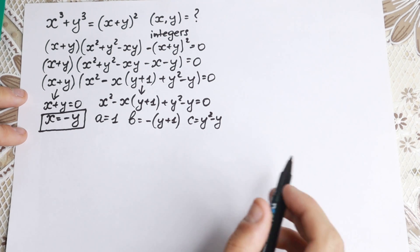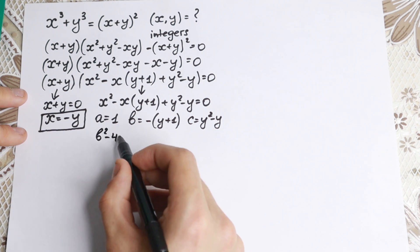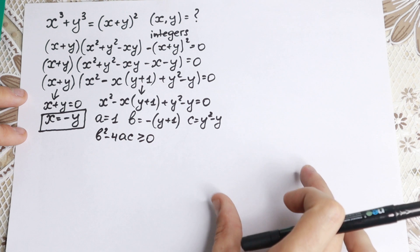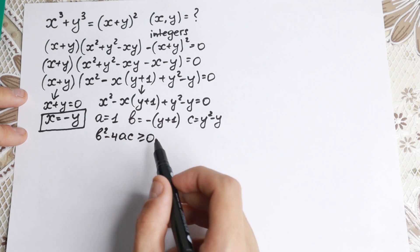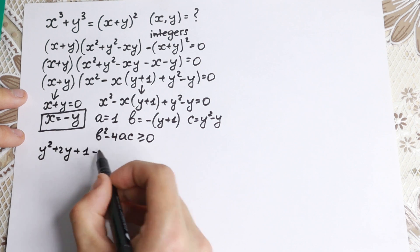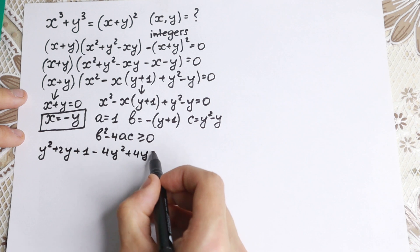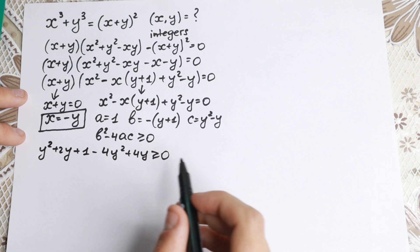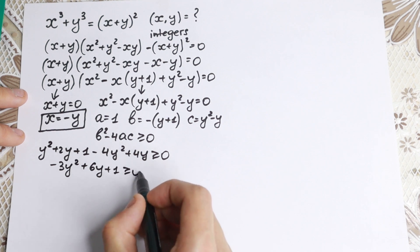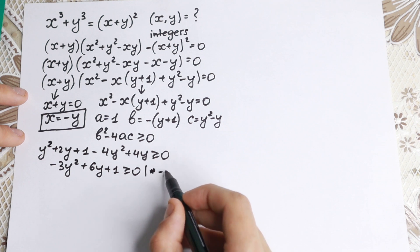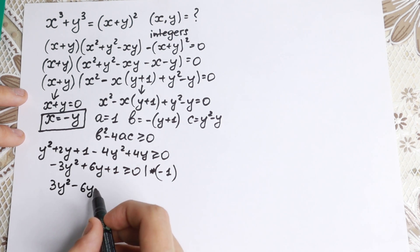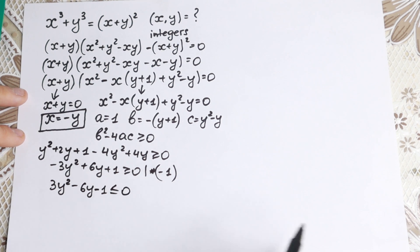We need to find where is our y. Firstly, we need to write an equation where b² minus 4ac is greater or equal to 0. This is our discriminant. Let's solve this inequality, and then we will find in which range our y lies. We have b² minus 4ac: we get y² plus 2y plus 1 minus 4y² plus 4y greater or equal to 0. Regrouping: minus 3y² plus 6y plus 1 is greater or equal to 0. Multiplying by minus 1, our final inequality is 3y² minus 6y minus 1 less than or equal to 0, because we change our inequality sign.